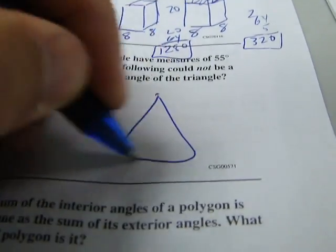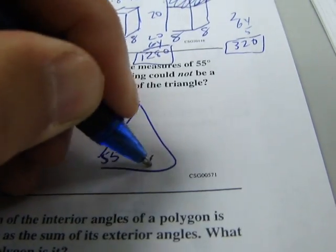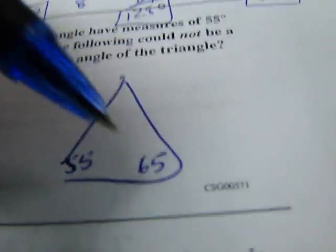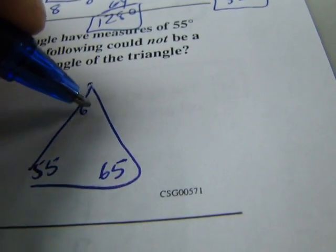So let's draw a triangle. It says one will be 55, one will be 65. We can do the triangle sum theorem to find the third one. So if I add these two together I get 120 which leaves 60.